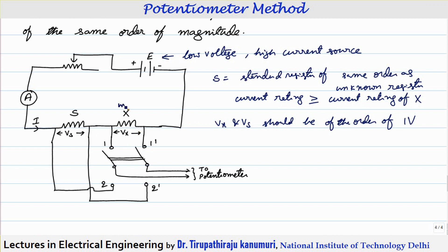Here X is the unknown resistor. The variable resistor is used for varying the total resistance such that the current flows in a way that the voltage drop across both the standard and unknown resistors is approximately 1 volt.